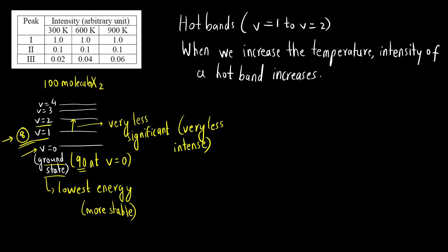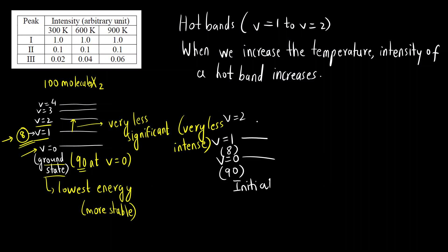Initially, only 8 molecules are present at the V=1 energy level. So only 8 molecules will be excited from V=1 to V=2. This gives a very low intensity — let's say 0.02 — at 300 Kelvin.